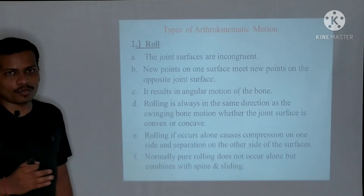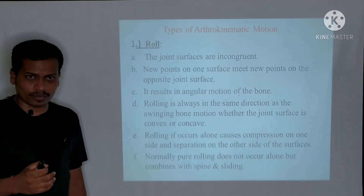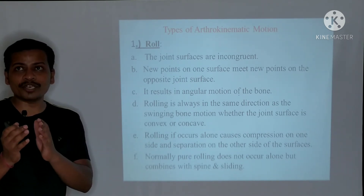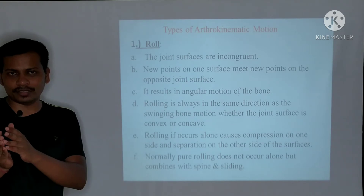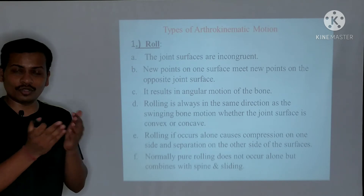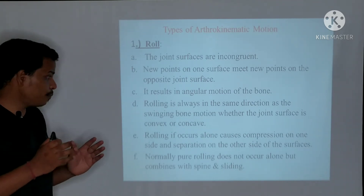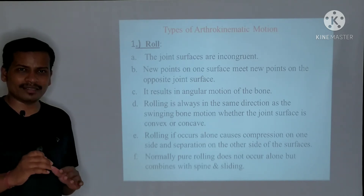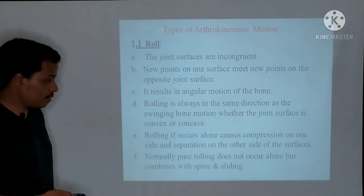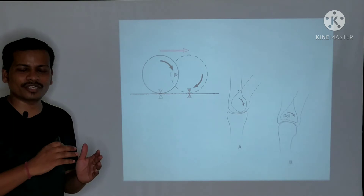Rolling results in angular motion of the bone. If rolling occurs alone, it causes compression on one side of the joint and separation on the other side. Normally, pure rolling does not occur alone — it occurs in combination with slide and spin.